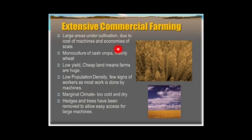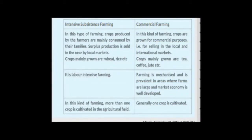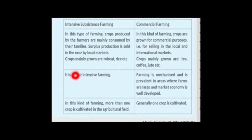In extensive commercial farming, large areas are under cultivation, and monoculture is practiced — a single crop like wheat is grown every season. Low population density has encouraged this type of agriculture. In intensive subsistence farming, crops are produced mainly for the farmer's family and extra crops are sold in the local market. In commercial farming, crops are grown for profit and are machine-intensive, whereas subsistence farming is labor-intensive. In commercial farming usually one crop is grown, while in intensive subsistence, more than one crop is grown.